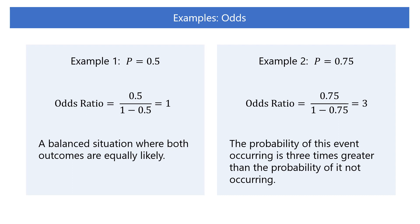Let's see some examples. When an event has a 50% probability of occurring, there is also a 50% probability that the event will not occur. In this case, the odds is 0.5 divided by 1 minus 0.5, so it is 1. When the odds is 1, it indicates that the probability of the event occurring is equal to the probability of it not occurring — a balanced situation where both outcomes are equally likely.